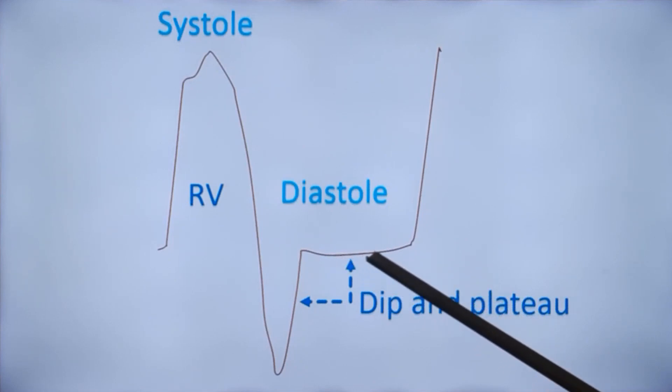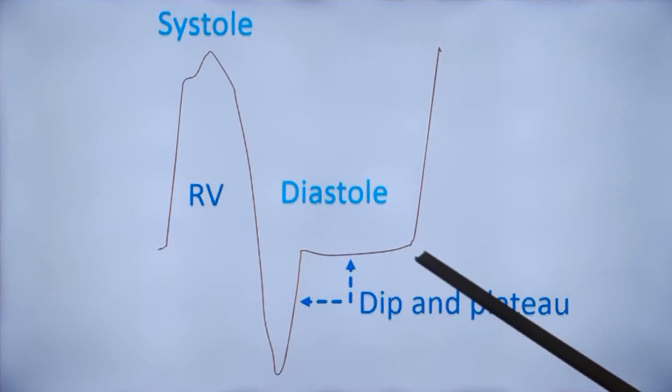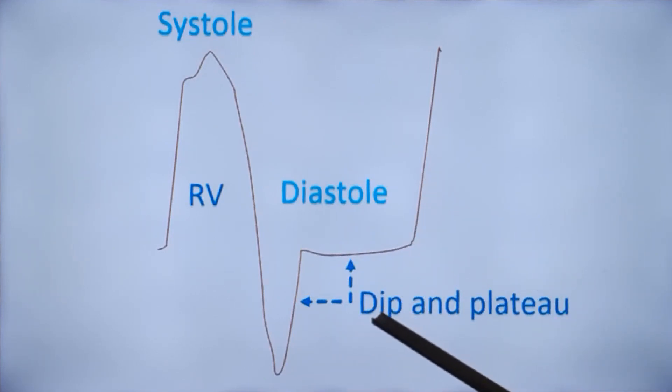There is hardly any filling in mid and late diastole, which causes the plateau. So, dip and plateau sign is because of the severe pericardial restraint in chronic constrictive pericarditis.